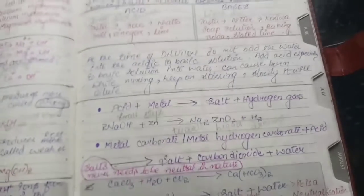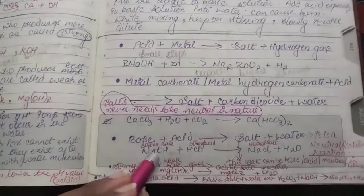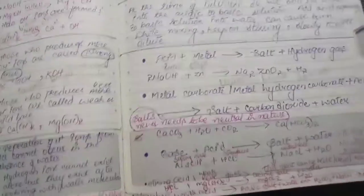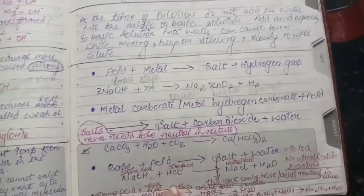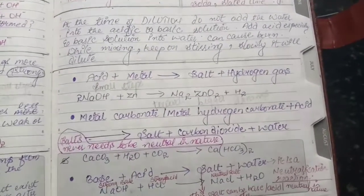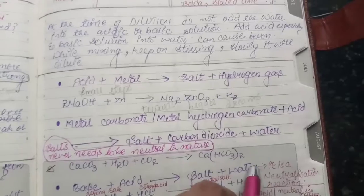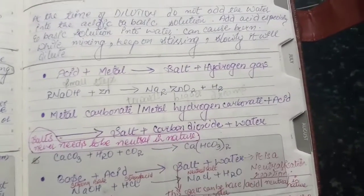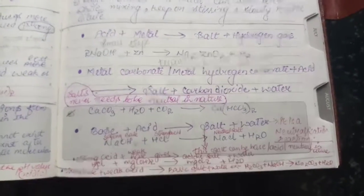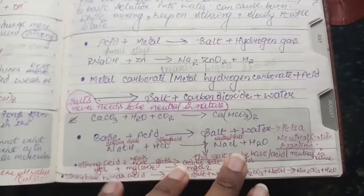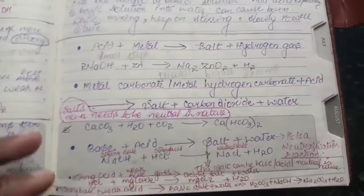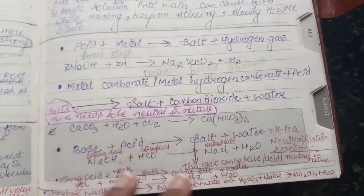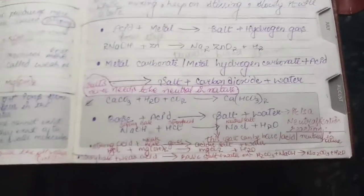Now we have to give base plus acid. We know that base plus acid is a neutralization reaction. If you haven't seen my series, you can also see that. Base plus acid is salt plus water. This is a neutralization reaction. But once again, we have to remember that salt is not needed to be neutral in nature. Salt can be acidic in nature, it can be acidic salt, it can be basic salt also, which people do not know.